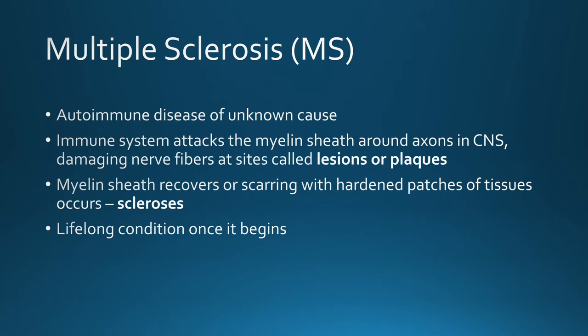Multiple sclerosis is an inflammatory disease where the immune system attacks its own central nervous system, which includes the brain, spinal cord, and optic nerves. The target of the attack is usually the myelin sheath, a fatty substance that coats the nerve fibers in the central nervous system. When the myelin sheath is attacked, it results in lesions or plaques forming at these sites. Because multiple lesions are seen in the central nervous system, it is called multiple sclerosis. These lesions ultimately harden into patches of tissue called sclerosis.